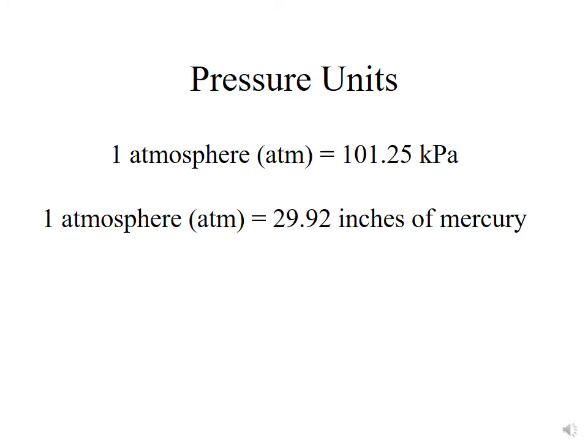And the units that we use: we can talk about one atmosphere. We're going to be using units primarily of kilopascals, and one atmosphere is equal to 101.325 kilopascals. In aviation, they often use inches of mercury, and one atmosphere is equivalent to 29.92 inches of mercury.